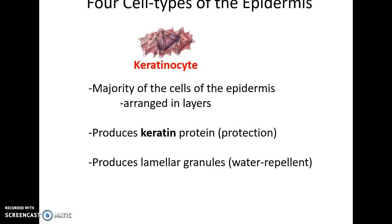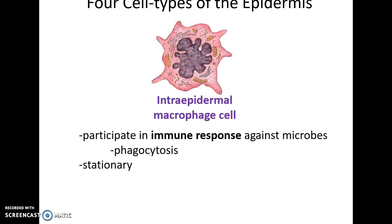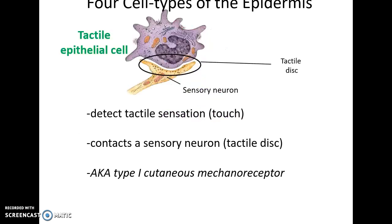Melanocytes are skin pigment-producing cells that produce the pigment melanin, which gets transferred to keratinocytes and helps protect our cells' DNA from UV light. Intraepidermal macrophage cells are immune cells that engulf microbes entering deeper layers of the epidermis through phagocytosis. Tactile epithelial cells detect the sense of touch; they are sensory receptors that contact a sensory neuron so information can be transmitted to the nervous system — also known as type 1 cutaneous mechanoreceptors.